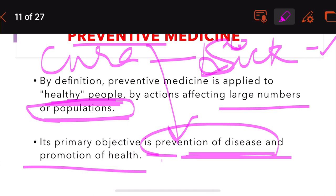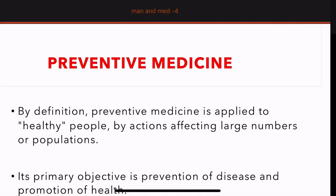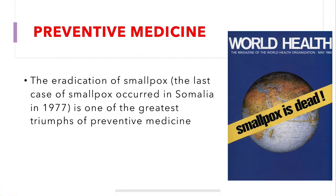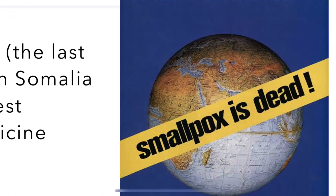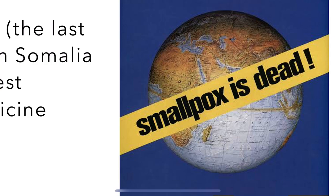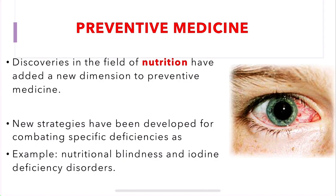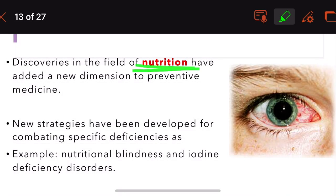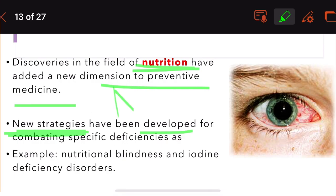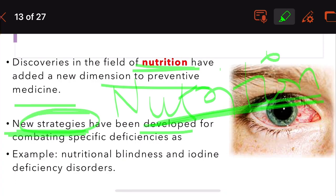The world has achieved one great thing: the eradication of smallpox. The last case of smallpox was dated in Somalia in 1977. It is the greatest triumph of preventive medicine. Discoveries in nutrition have also given a new dimension to preventive medicine. New strategies have been developed — now that deficiency disorders are known, new strategies have been developed to combat them.